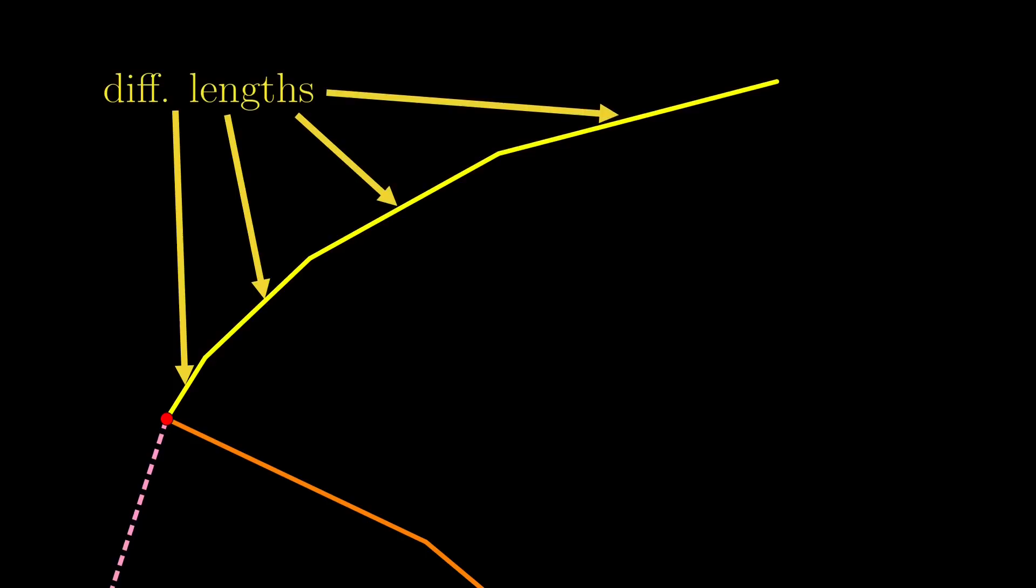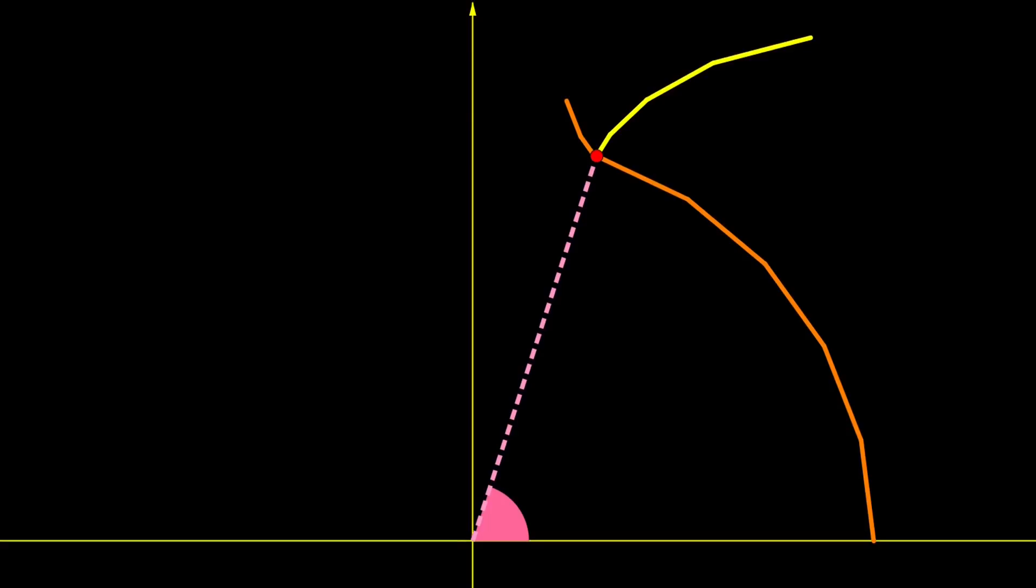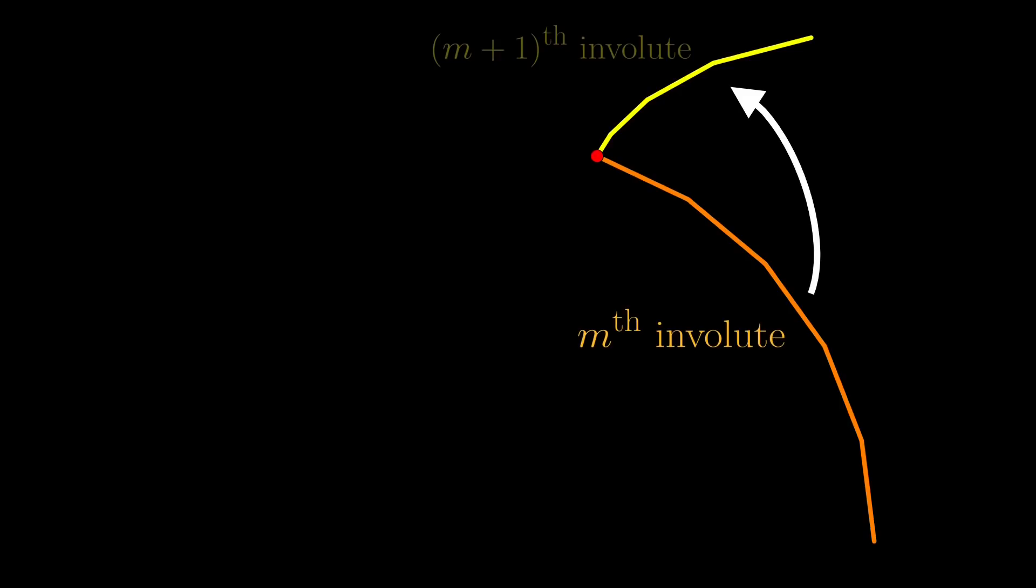The only difference is that these lines have different lengths. Anyway, again we wrap our string around this jagged involute wall, and unwrap the string in stages. In any of these involutes, the configuration is exactly the same as the first one, with the only difference being that the lengths of the segments might not be the same, or the whole setup is rotated. So we'll just use this diagram to see how we can go from the mth involute to the m plus 1th involute.